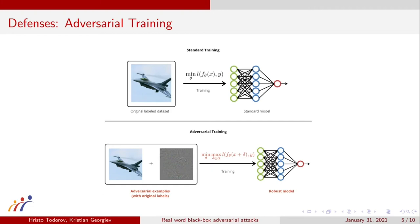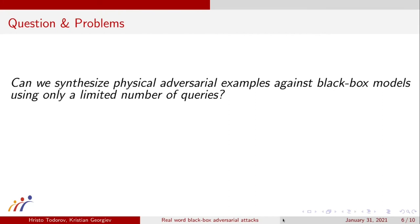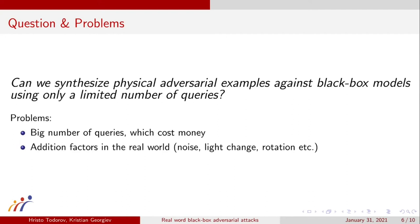The question we want to answer with our research is whether we can synthesize physical adversarial examples against a black-box model using only a very limited number of queries. There are two main problems: the first being the large number of queries required to synthesize such adversarial examples, which cost money due to the fact that black-box models usually give very little information. And in the real world, there are quite a lot of additional factors such as noise, light change, rotation, etc., which may alter the adversarial examples when placed in the physical world.